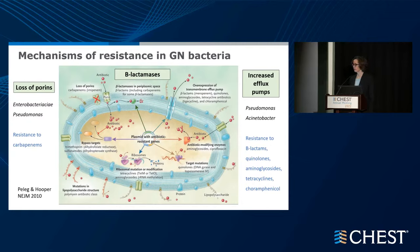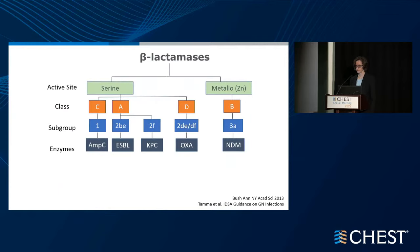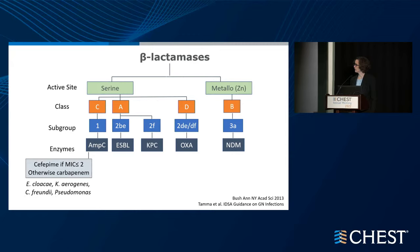Shifting gears to gram-negative pneumonias — it is important to think about mechanisms of resistance. Common ones seen in organisms causing HAP and VAP include loss of porins generating resistance to carbapenems, beta-lactamases, and increased efflux pumps affecting pseudomonas and acinetobacter that generate very broad-spectrum resistance. Beta-lactamases are divided into serine and metallo-beta-lactamases depending on the amino acid substitution at the active site. AMP-C is often inducible — an organism may appear susceptible initially but develop inducible resistance.